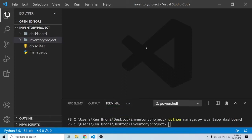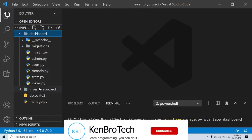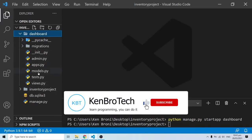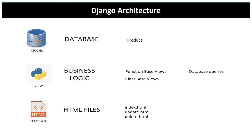Hello everyone, welcome back. In this part of the video we are going to discuss the Django architectural framework and also make sense of some of the files we have in our app folder, like models.py and views.py. As far as the Django architectural framework is concerned, we are most likely to hear something like MVT or MTV. The M stands for Model, the V stands for View, and the T stands for Templates.